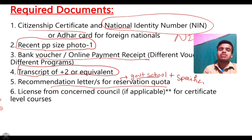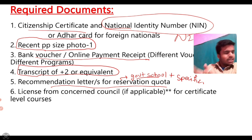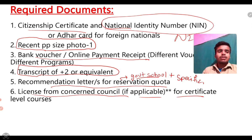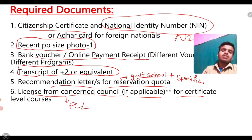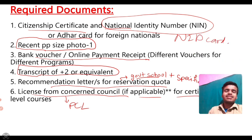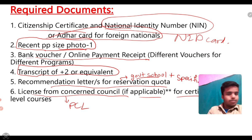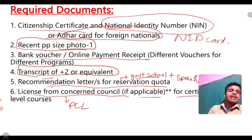You don't need to worry about anything else. Next is a license from the concerned council, if applicable — this is only for PCL diploma, not for basic science. So required documents once more: citizenship, photo, for foreign nationals their passport, bank voucher or online payment receipt, transcript, recommendation, and license from the respective council.